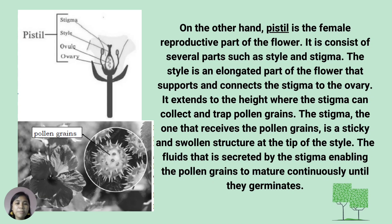On the other hand, the pistil is the female reproductive part of the flower. It consists of several parts such as style and stigma. The style is an elongated part of the flower that supports and connects the stigma to the ovary. It extends to the height where the stigma can collect and trap pollen grains. The stigma, which receives the pollen grains, is a thick and swollen structure at the tip of the style. Fluids secreted by the stigma enable the pollen grains to mature continuously until they germinate.